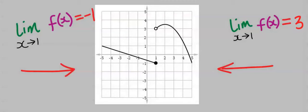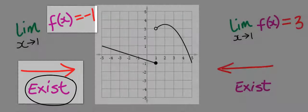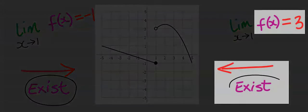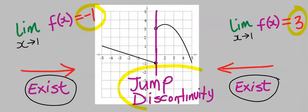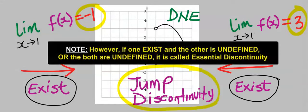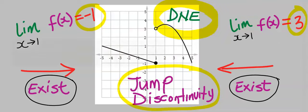This is analysis of this graph. We don't know the function but we can predict their behavior. In conclusion, the left hand limit exists and the right hand limit exists. However, their answers are not the same. This is called jump discontinuity and we can say this function does not exist.